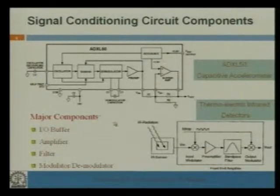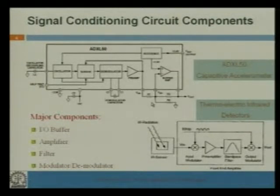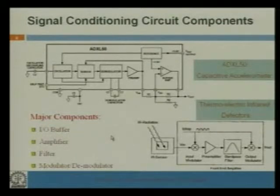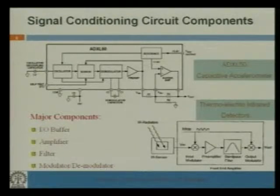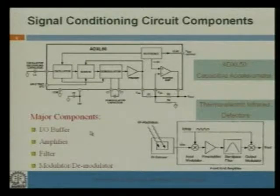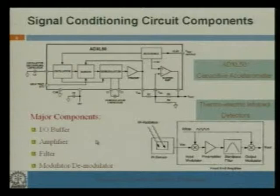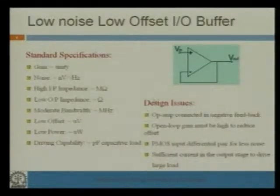The major components in any signal conditioning circuit are basically an I/O buffer — that is, input-output buffer — and then an amplifier, a filter, and a modulator or demodulator. These are the major blocks in any signal conditioning circuit. First, we discuss the low noise or low offset input-output buffer.